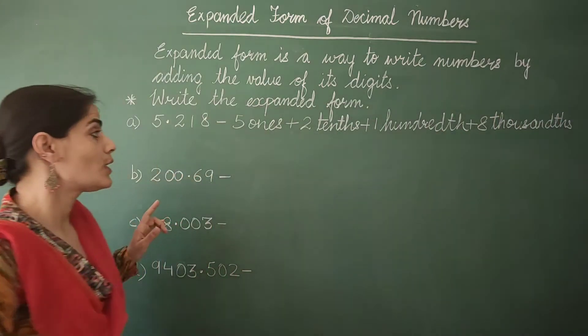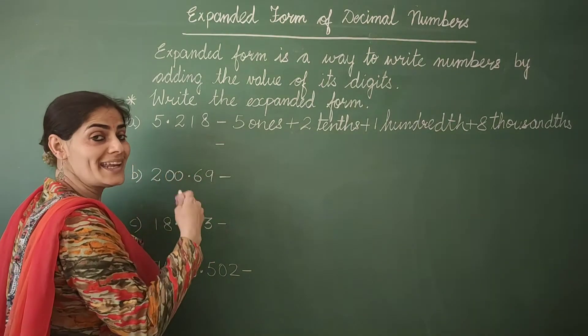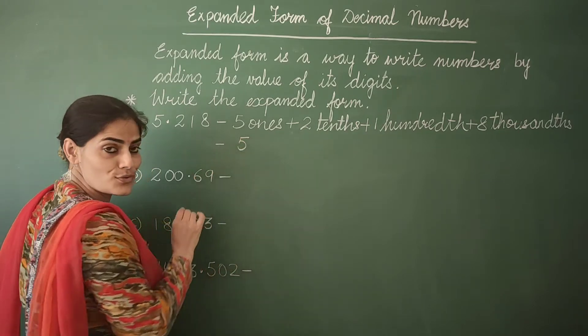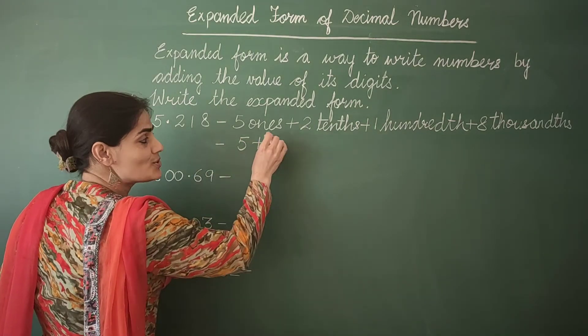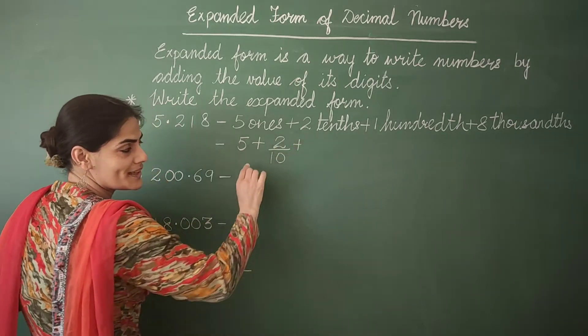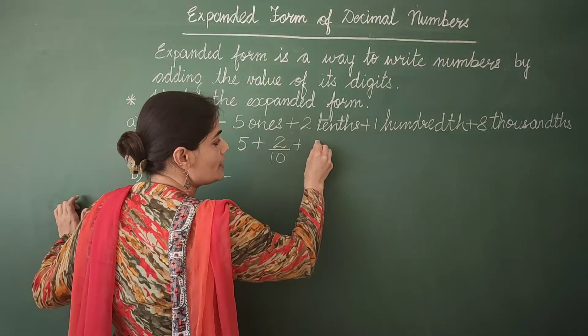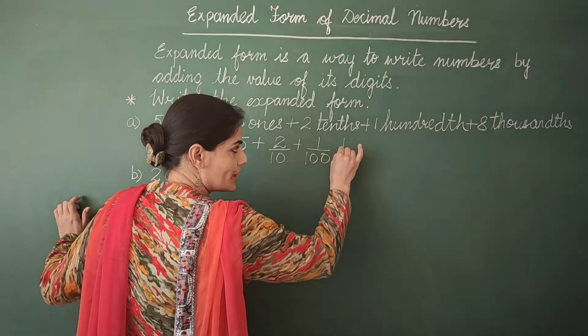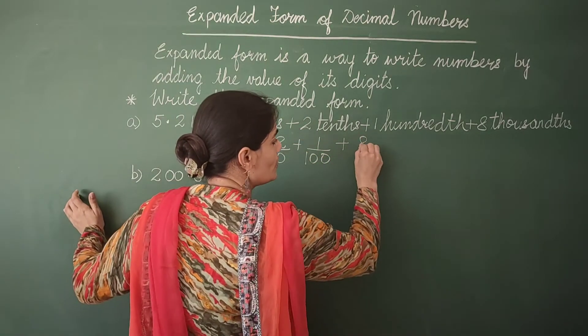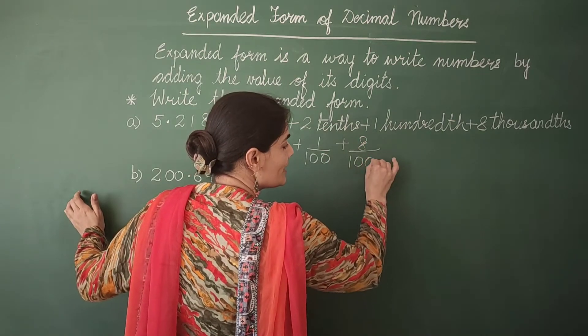Now we can express it in other form also. 5 ones is equal to 5. 2 tenths is equal to 2 upon 10. 1 hundredth is equal to 1 upon 100. And 8 thousandths is equal to 8 upon 1000.